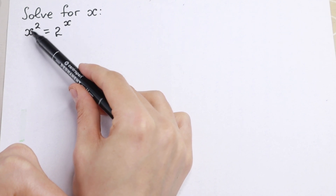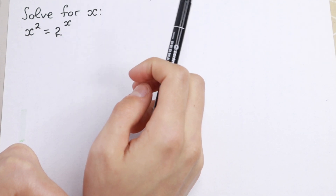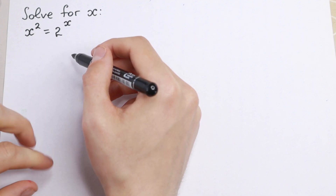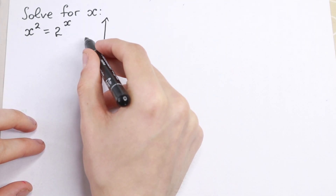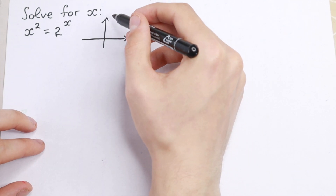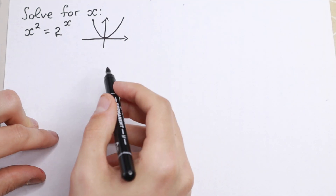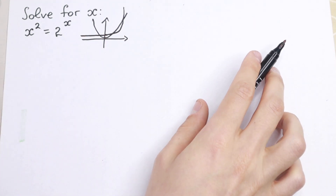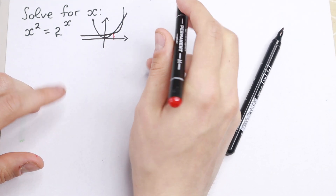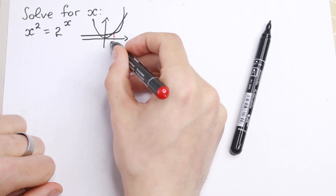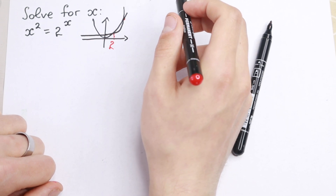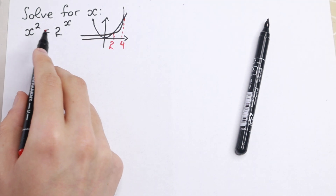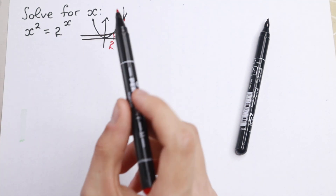For example, if we plug in 2, we'll have 2² equal to 2², which is really good. But I want to go further and show you that we will have more roots, not only 2. If we draw a small graph, we know that x² is a parabola and 2 to the power x is an exponential function. We have one obvious point of intersection at x=2, and moreover one more point, which gives us our second root x=4. Because 4² equals 2 to the fourth power, which equals 16.